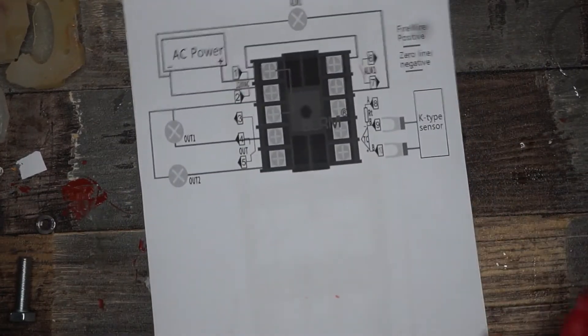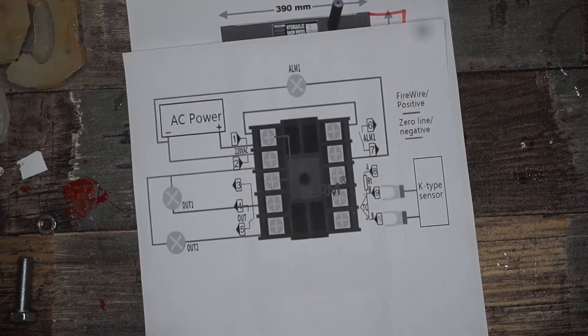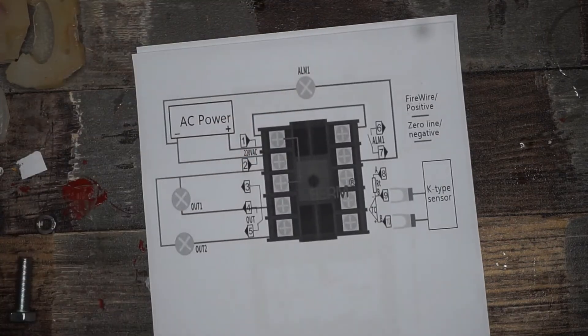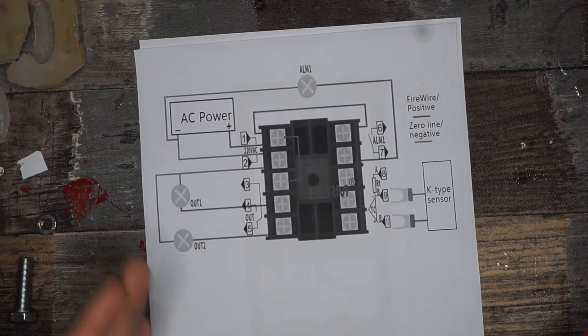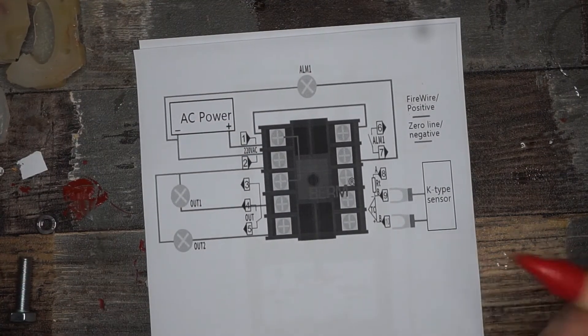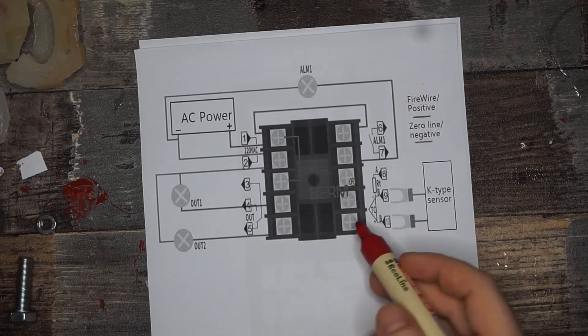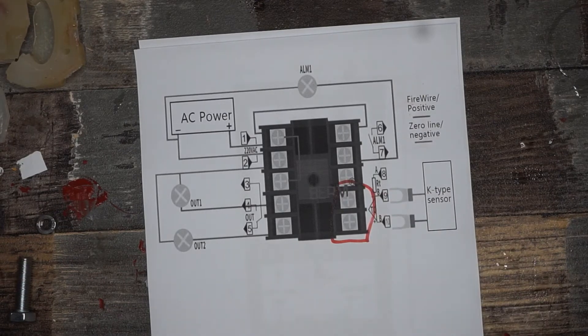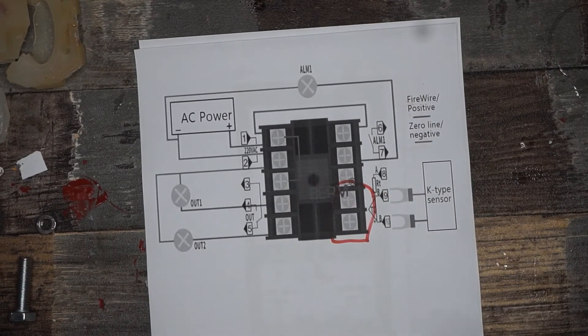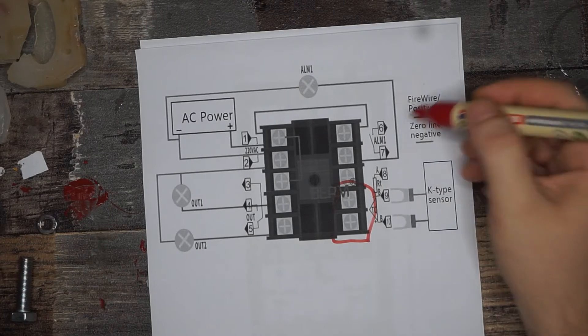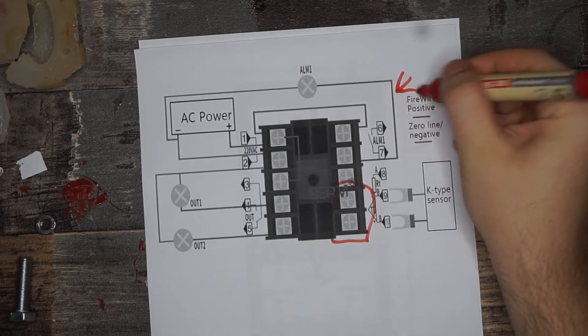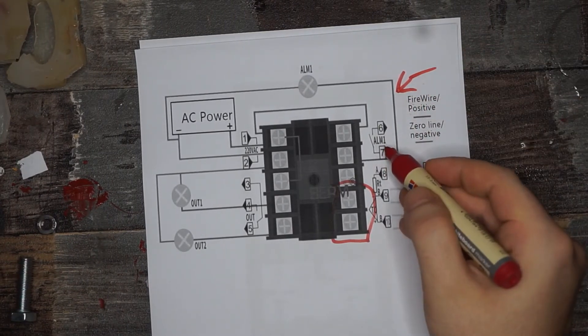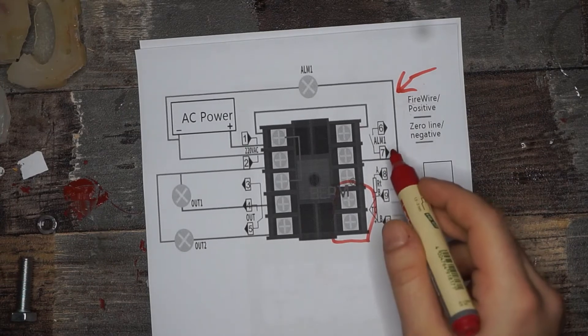Again I'm not sure if you will use the same PID controller as me. But wiring is quite simple. I used a K-Type sensor. It just has two wires going into this side. And then you have an output, an input for the voltage. And you have right here contacts for an alarm. You don't have to connect those.